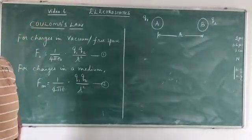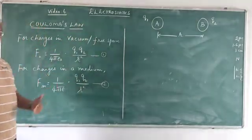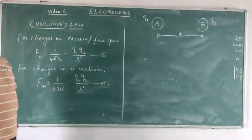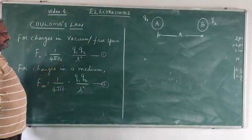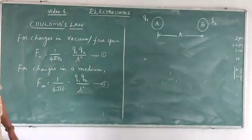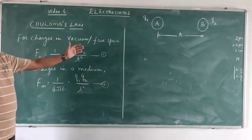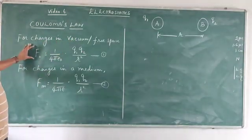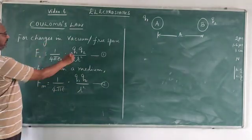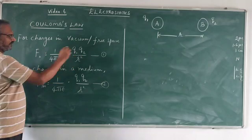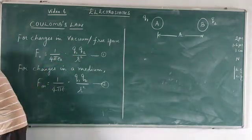In video 6 on Electrostatics, we will again talk about Coulomb's law. We know for two charges, like or unlike charges, placed in vacuum or in free space, F0 is equal to 1 upon 4 pi epsilon 0, Q1, Q2 upon R square.